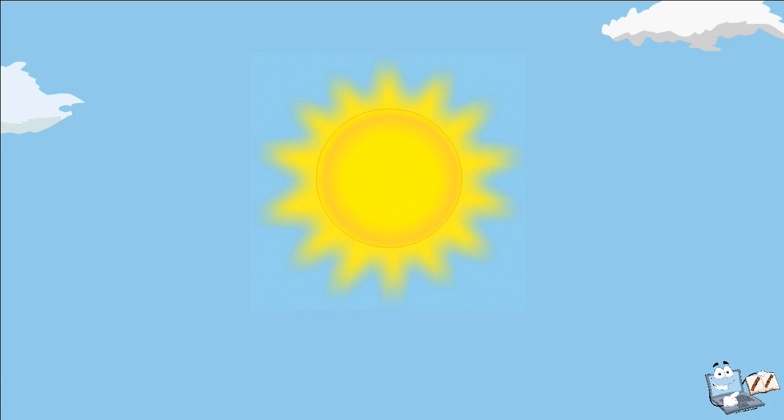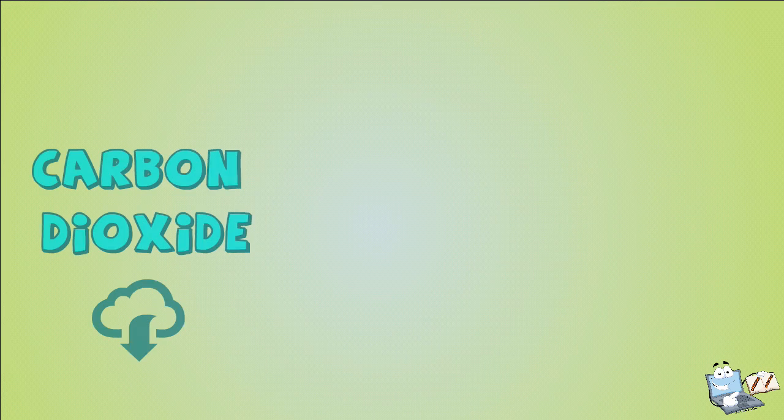And here comes the sun, one more important factor for photosynthesis. So, now we know plants need three things for photosynthesis: carbon dioxide, water, and sunlight.